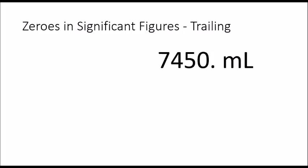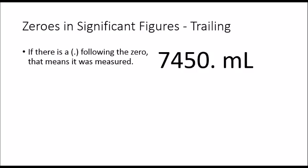Now there can be an exception to this. Pay attention to that little decimal point that has now appeared. If there is a decimal point following that zero, it means that zero was actually measured. So the zero is now significant, and our measurement ends there. Our zero contains all the error, meaning there are 4 significant figures in this number.